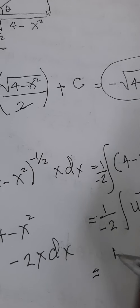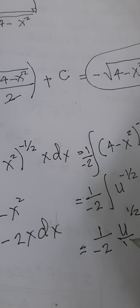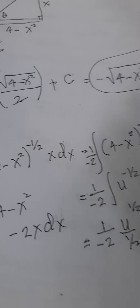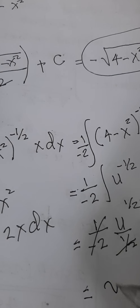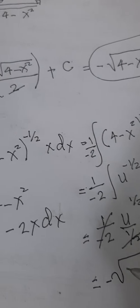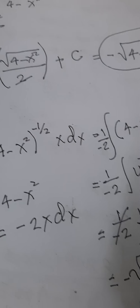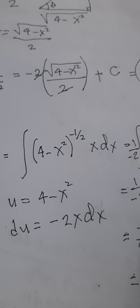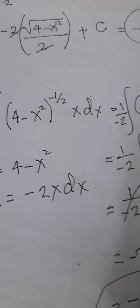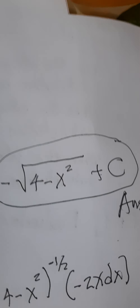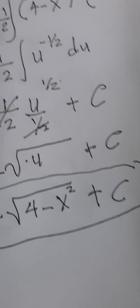The solution gives U raised to negative one half plus one, which is U raised to one half, over one half, plus C. The one half cancels, leaving U raised to one half, which is the square root of U — that is, the square root of 4 minus X squared. This is the same result as our solution using trigonometric substitution — they are the same.